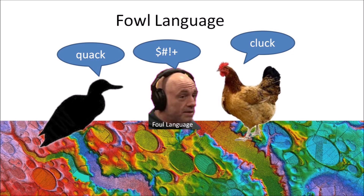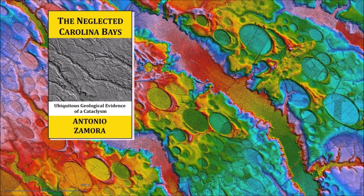Pardon my French — all the language in this video was necessary to express my frustration that the geometry of the Carolina Bays is ignored in geology books and by many geologists. Thank you for joining me in the investigation of the Carolina Bays and the Younger Dryas Cataclysm. The Carolina Bays should not be neglected — ask your geology professors to discuss the Carolina Bays because they are the most prevalent geological structures in the Atlantic Coastal Plain. There is a link to the LiDAR visualization tool in the description. My book about the Carolina Bays is available at Amazon. Subscribe to my YouTube channel to be notified of future videos about the Carolina Bays and other scientific topics.